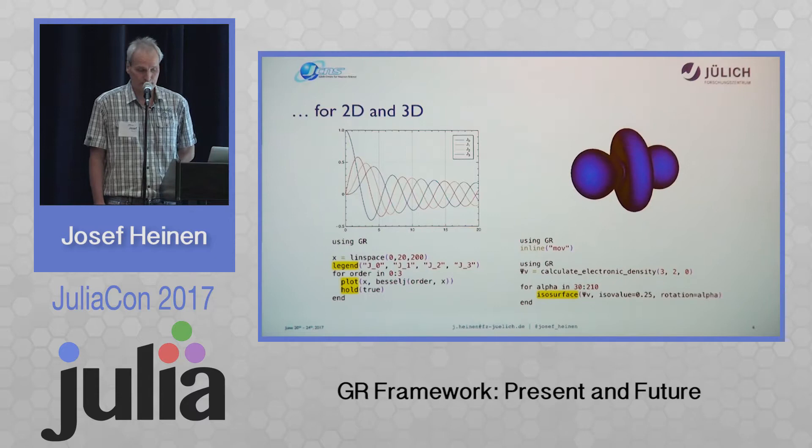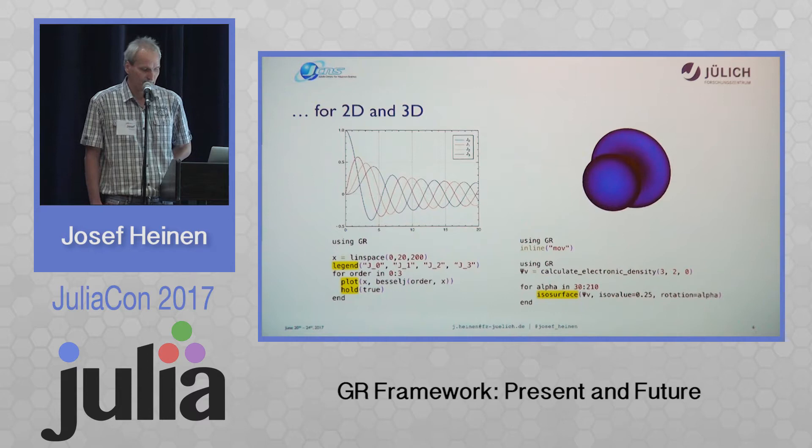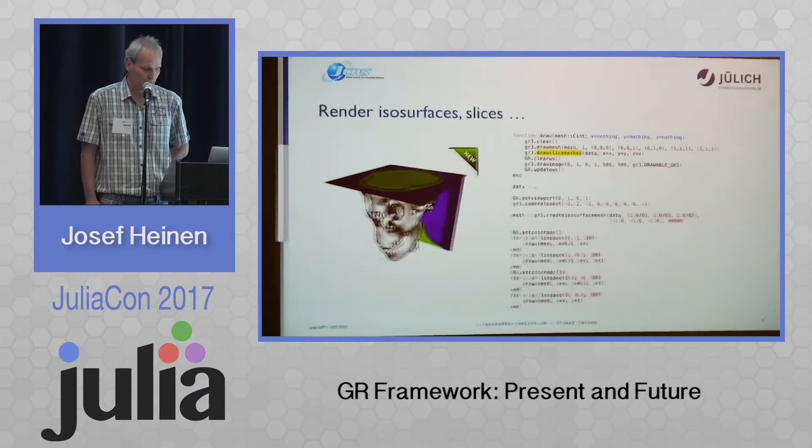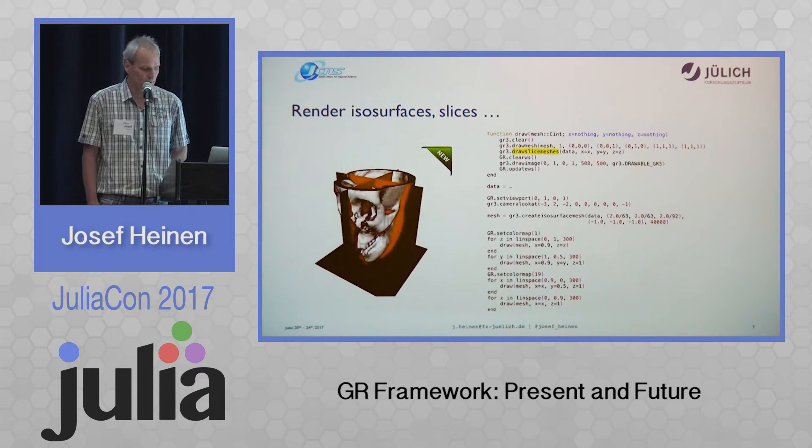We have two-dimensional and three-dimensional functions. In this case, GR is displaying an ISO surface and creating a movie from it which is then displayed. You can not only render ISO surfaces — you can also create slices in all directions. This is a quick example of how this can be managed using the GR3 component of GR.